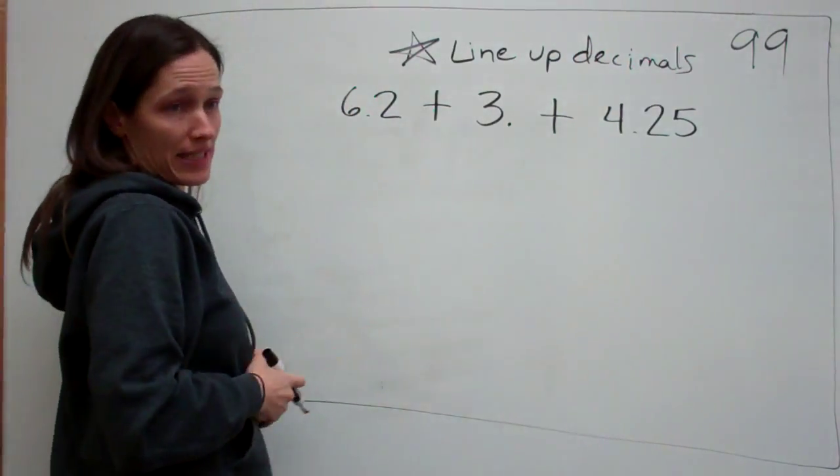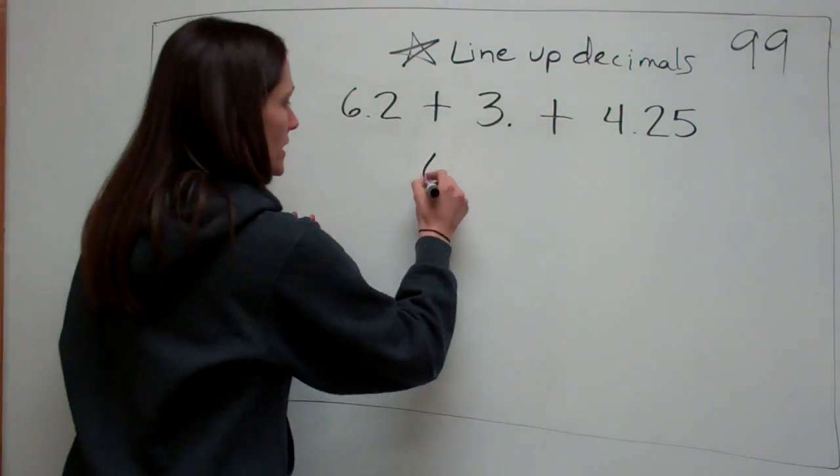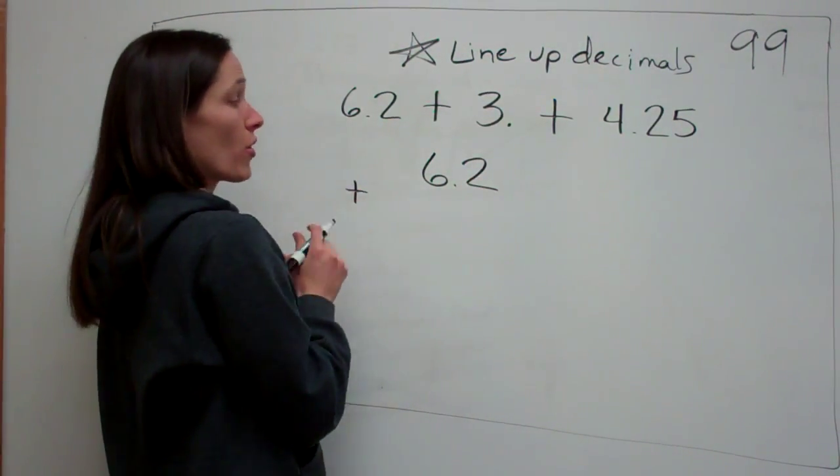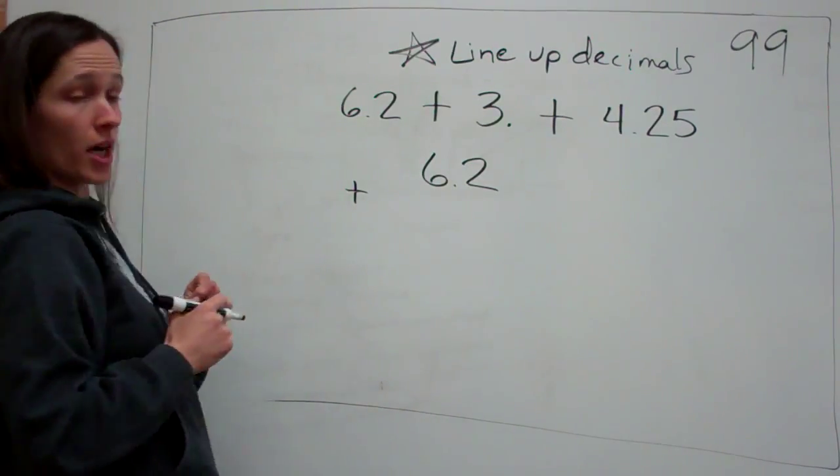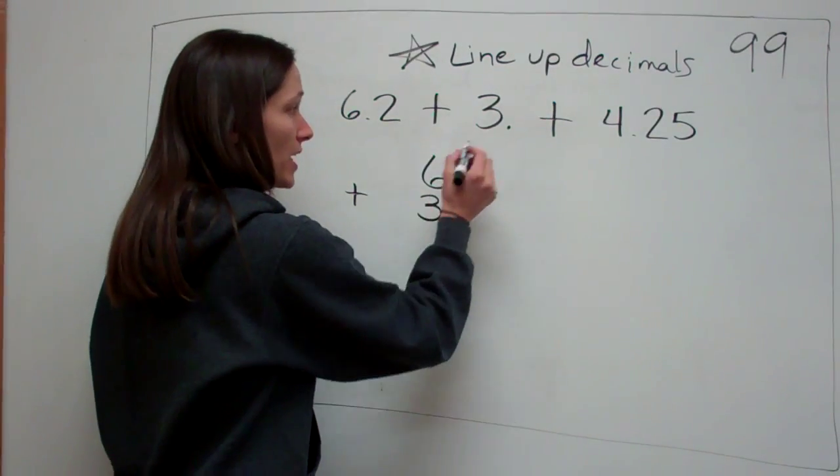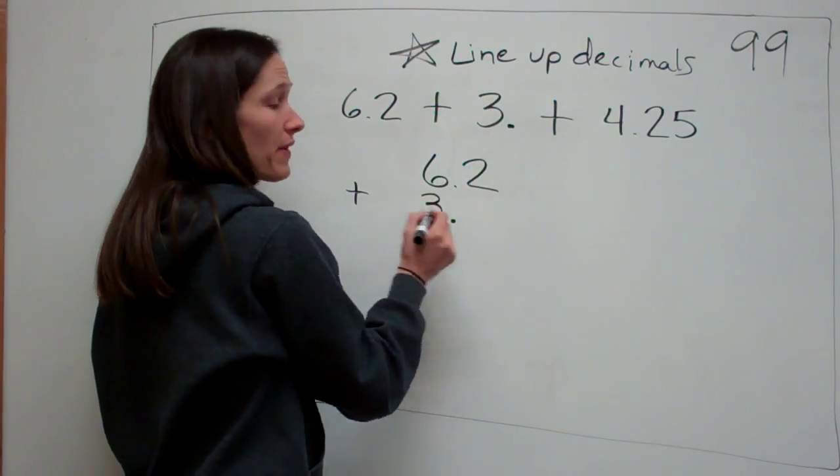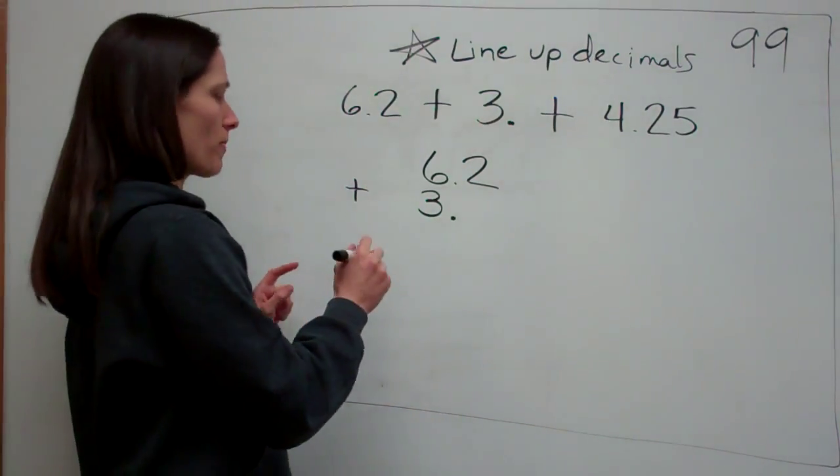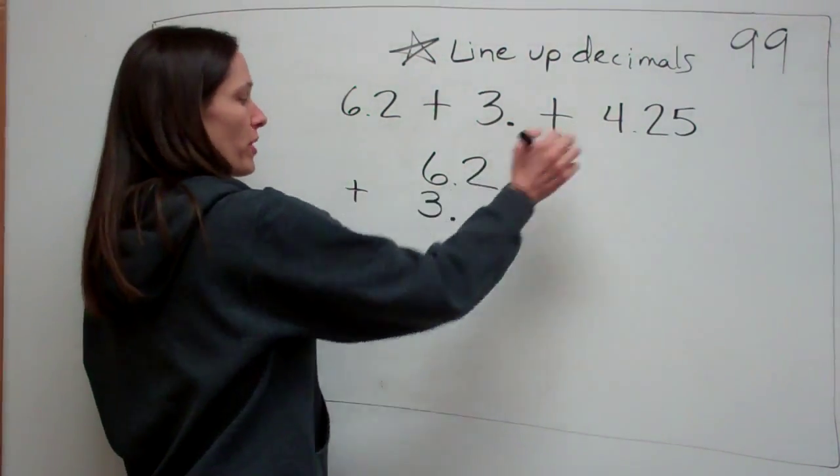When you're adding or subtracting, 6.2 is right there. Plus, where would I put this 3? Under what? Yes, under the 6. Why? Because there's a decimal after the 3, even though we didn't see it. Okay, we'll talk about it in just a minute. Okay, and then 4.25.